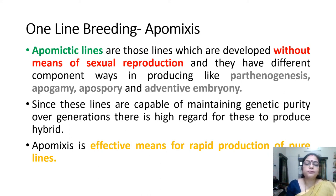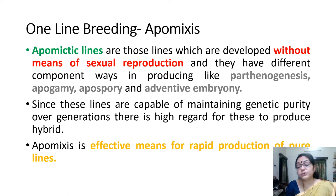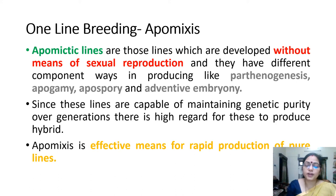Since these lines are capable of maintaining genetic purity over a generation, there is a high regard for these to produce hybrids. Apomixis is an effective means for rapid production of pure lines.